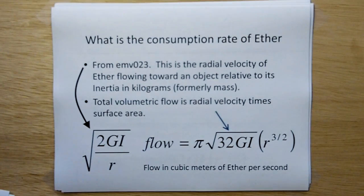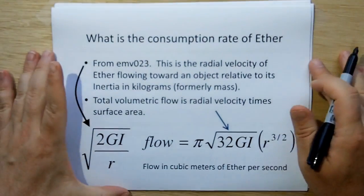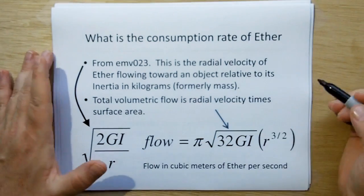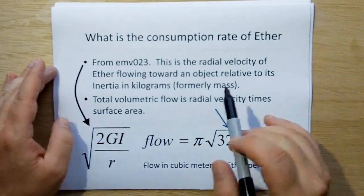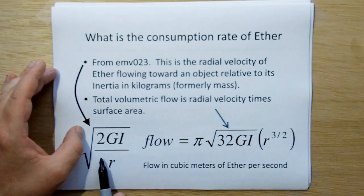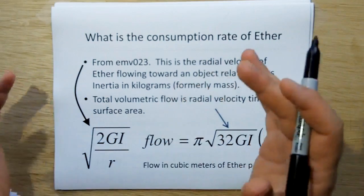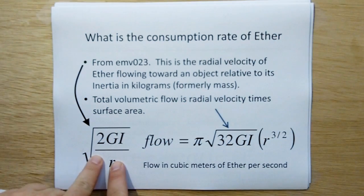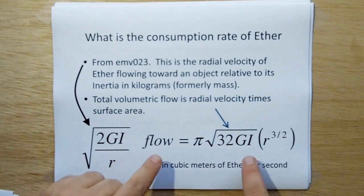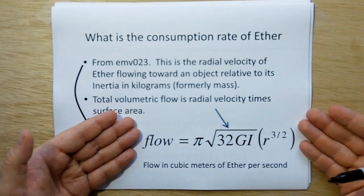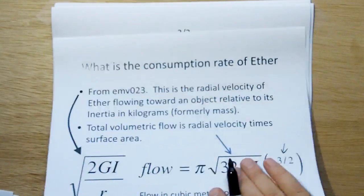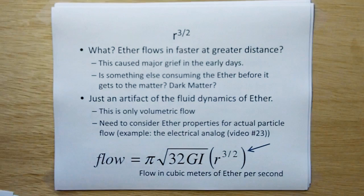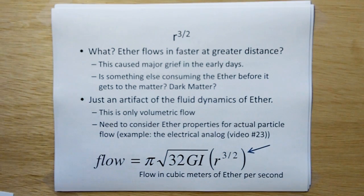So what's the consumption rate of ether? Well, from video number 23, we learned that the radial velocity of ether flowing toward an object is relative to its inertia object in kilograms, formerly called mass. So the total volumetric flow is the radial flow times the surface area of a sphere. So if we multiply this times the surface area of a sphere at radius r, we end up with this, which is a definition of flow of ether in cubic meters of ether per second. And this is interesting here. So what we're saying here is that ether flows faster at greater distances. And in the beginning of ether, this caused me a lot of grief.